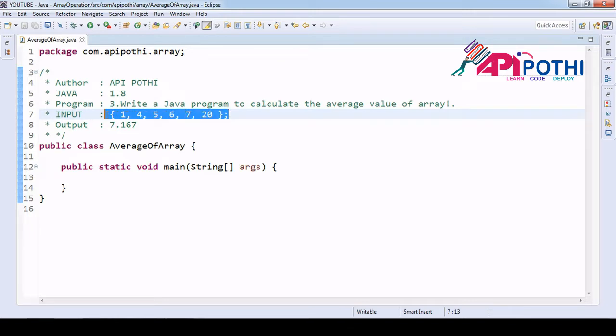I want to get the average of this array. Average means sum of anything divided by number of elements. Generally, if you see here, how many total numbers of elements are there?